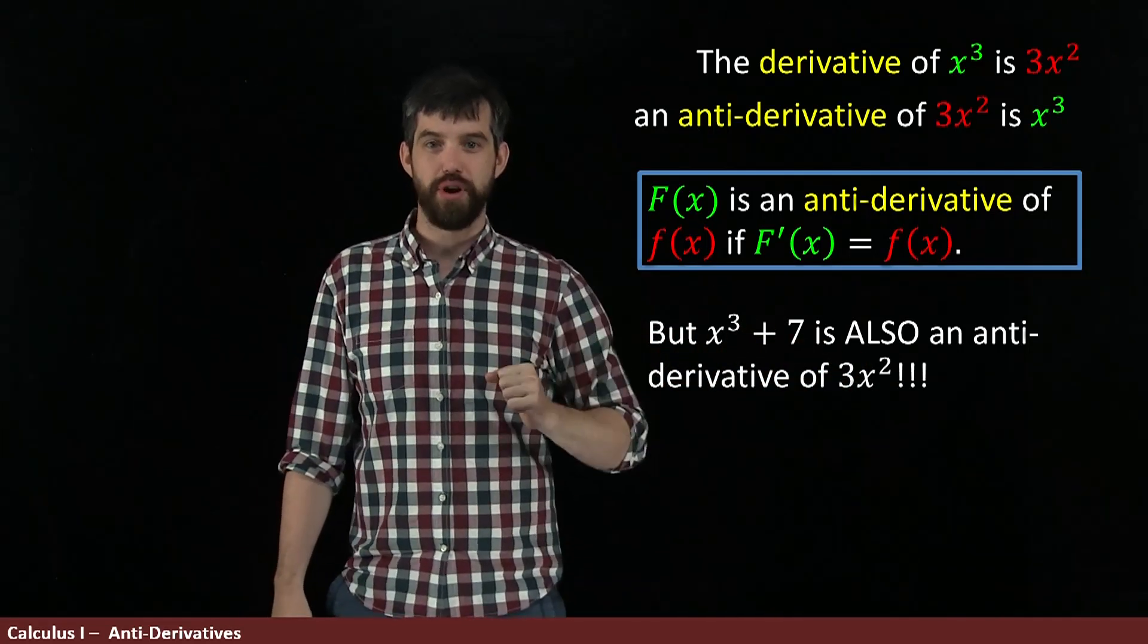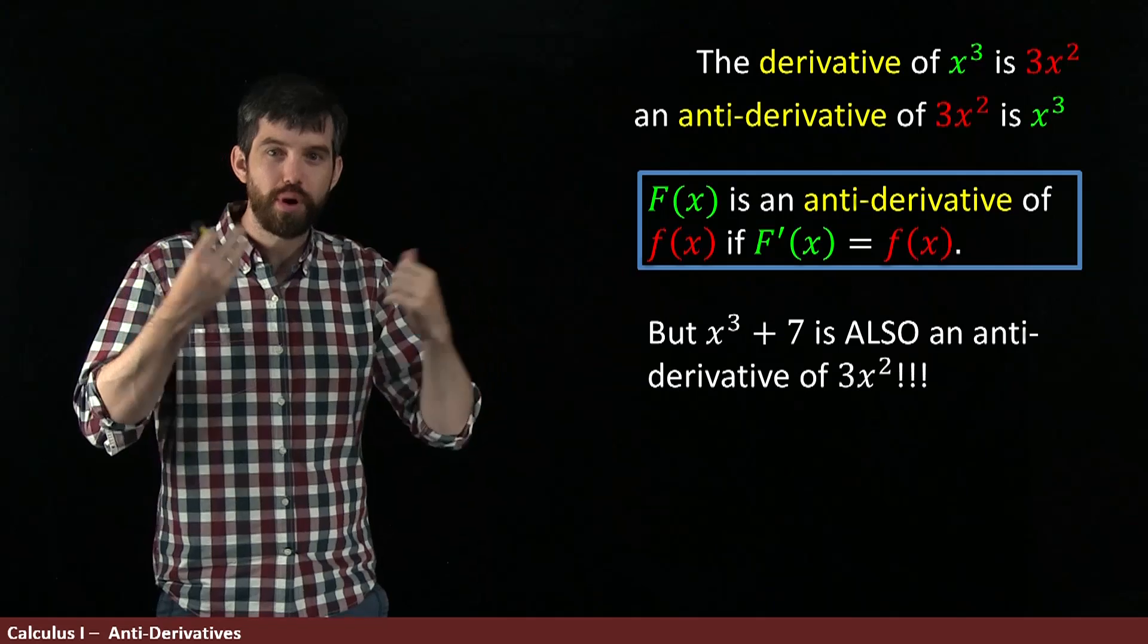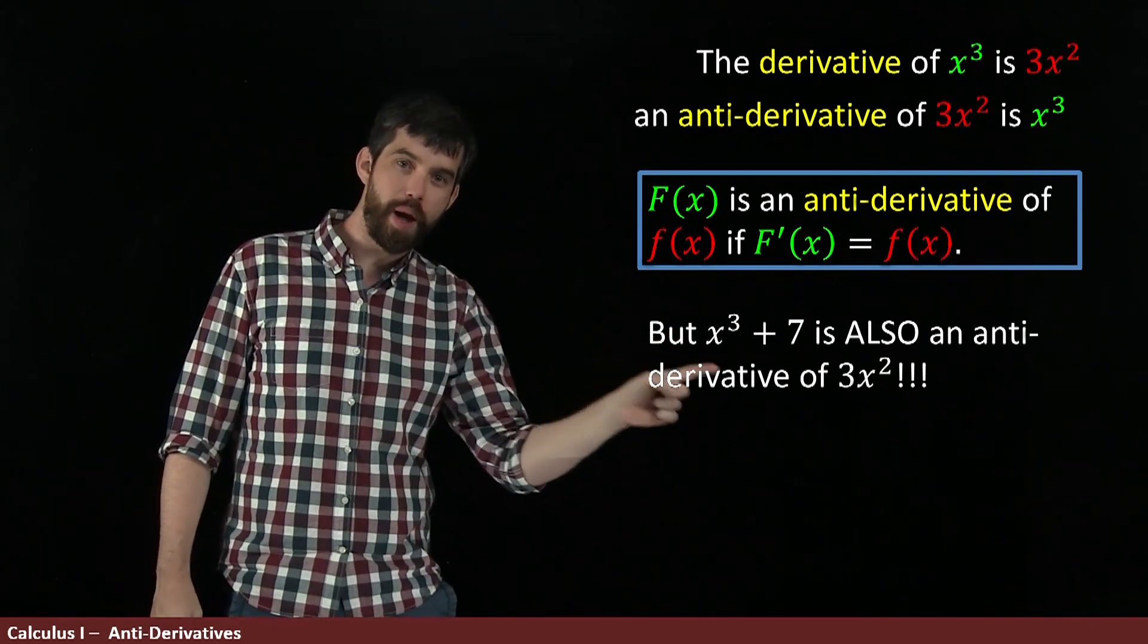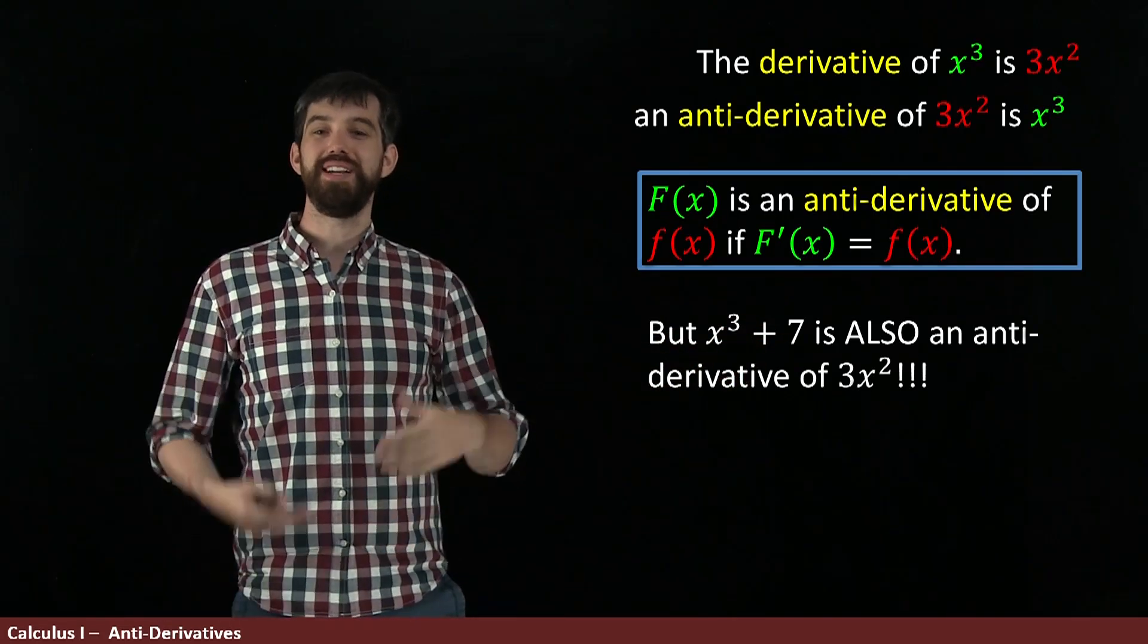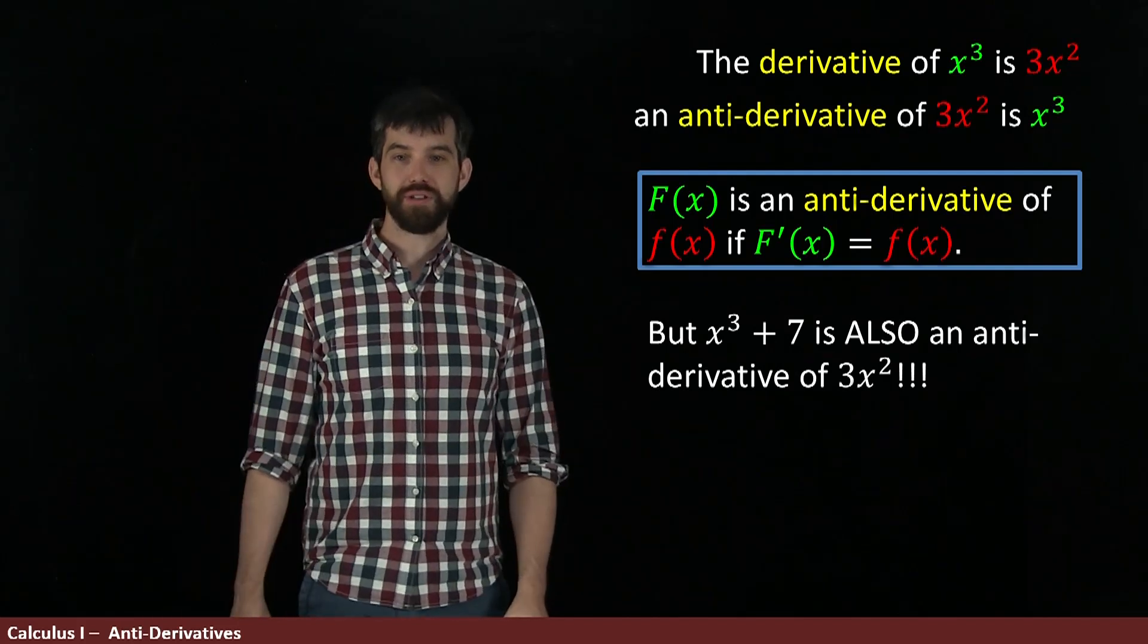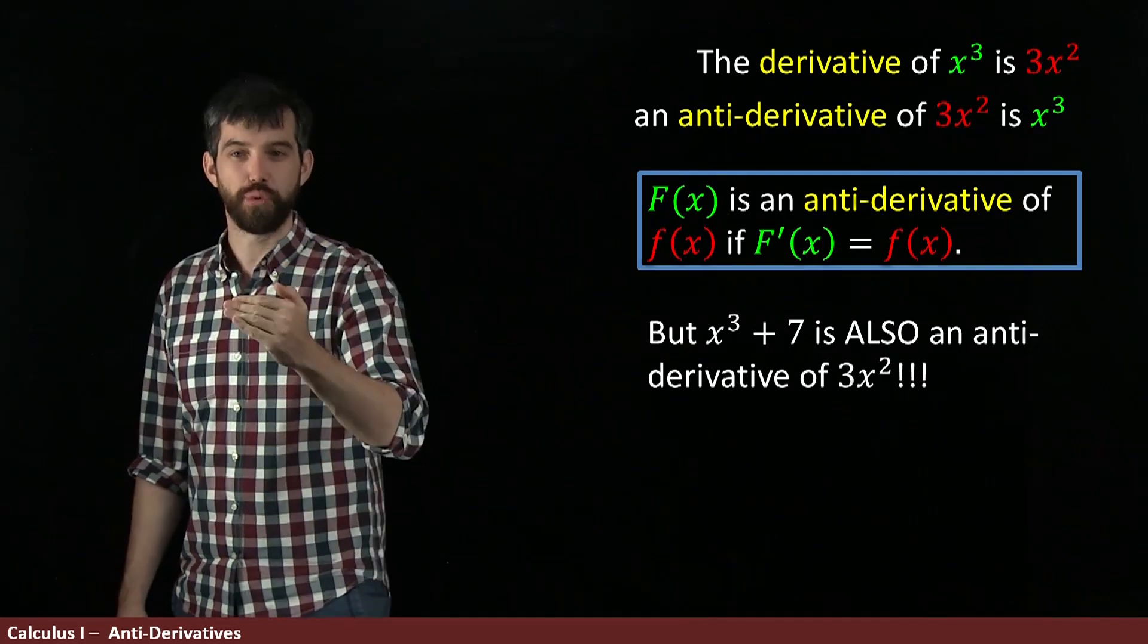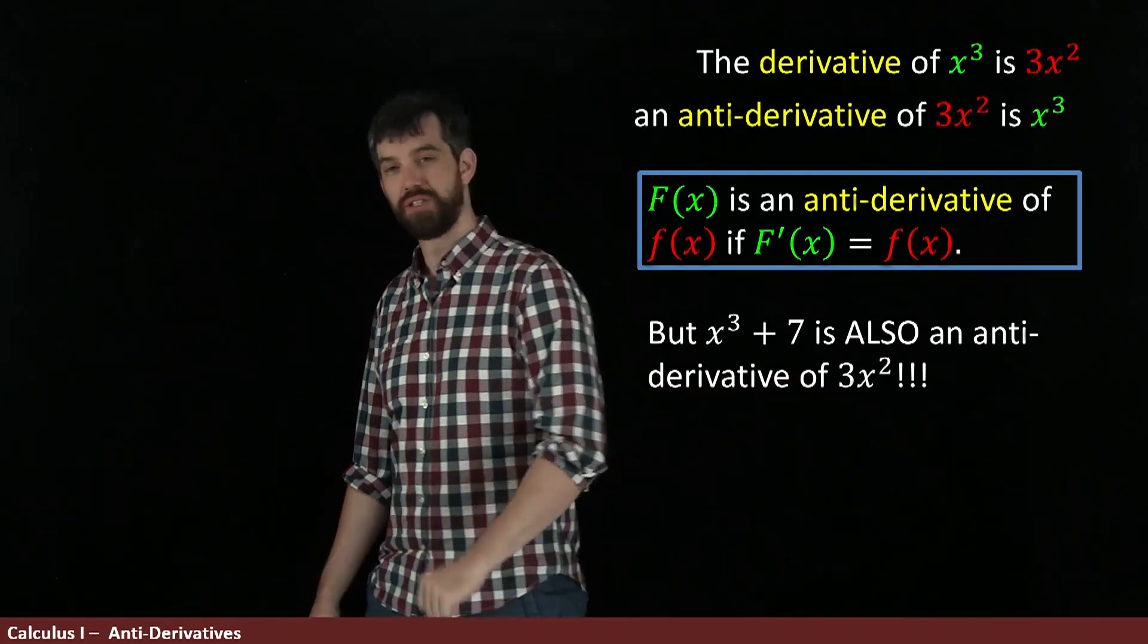Well, I claim this is my antiderivative. This is my capital F. If I take the derivative of it, I get 3x squared. And the derivative of 7 is 0. So there's two different antiderivatives for the same function 3x squared.